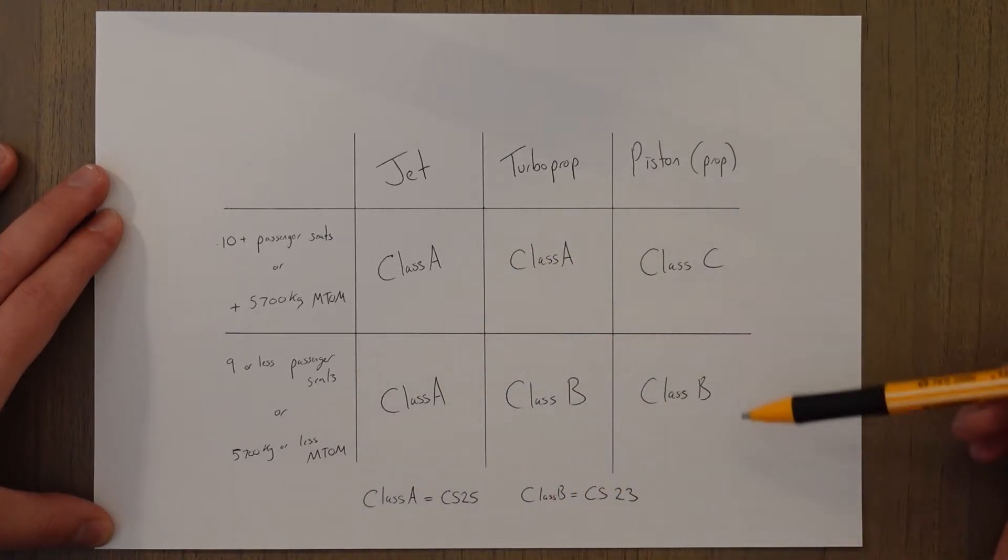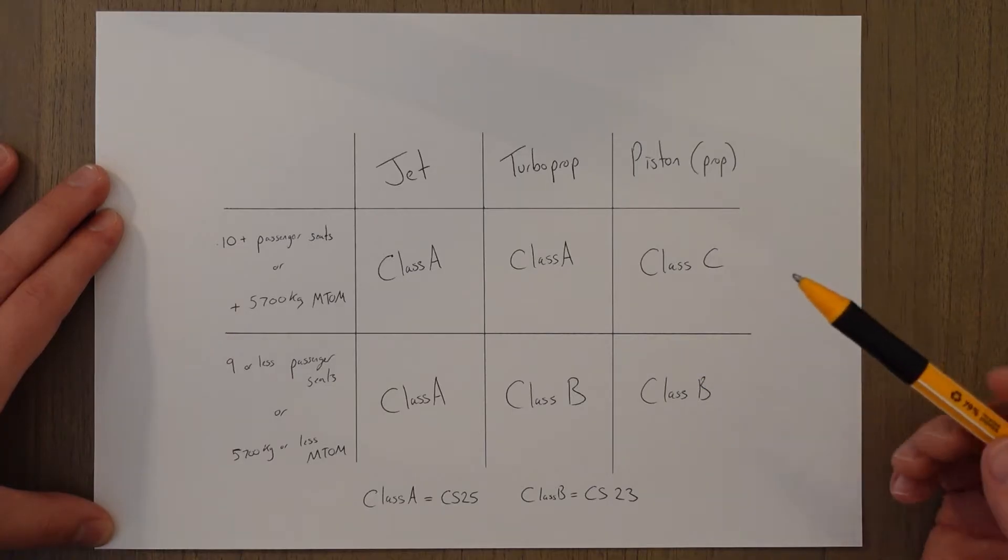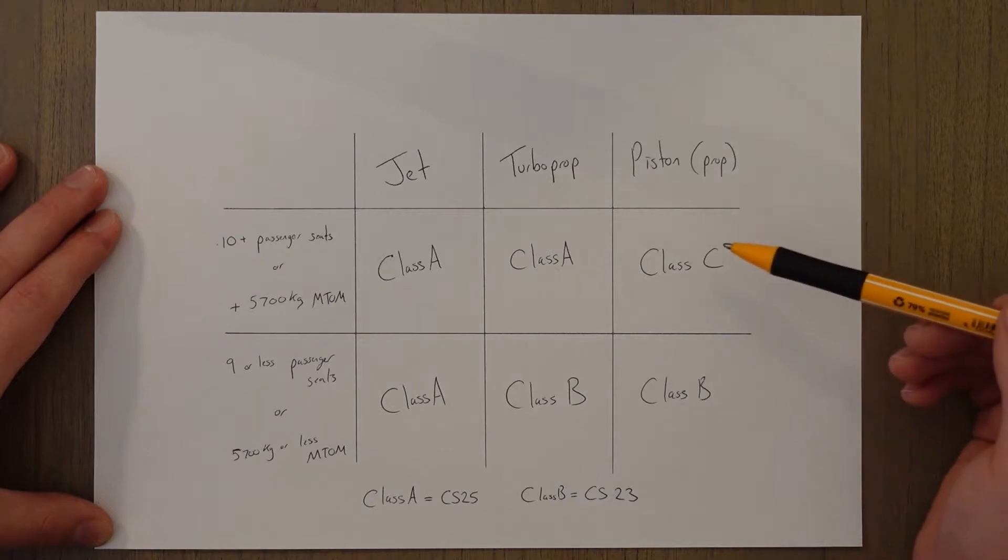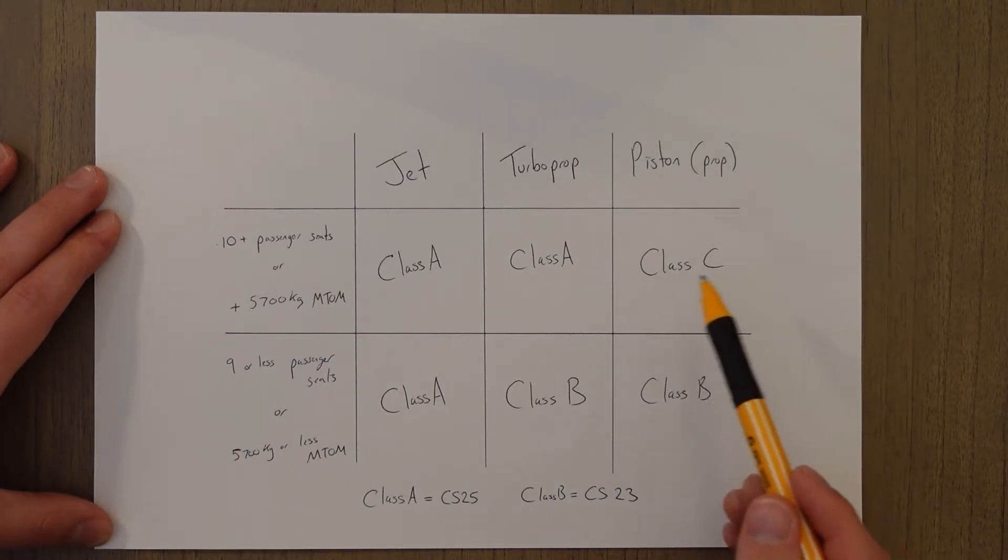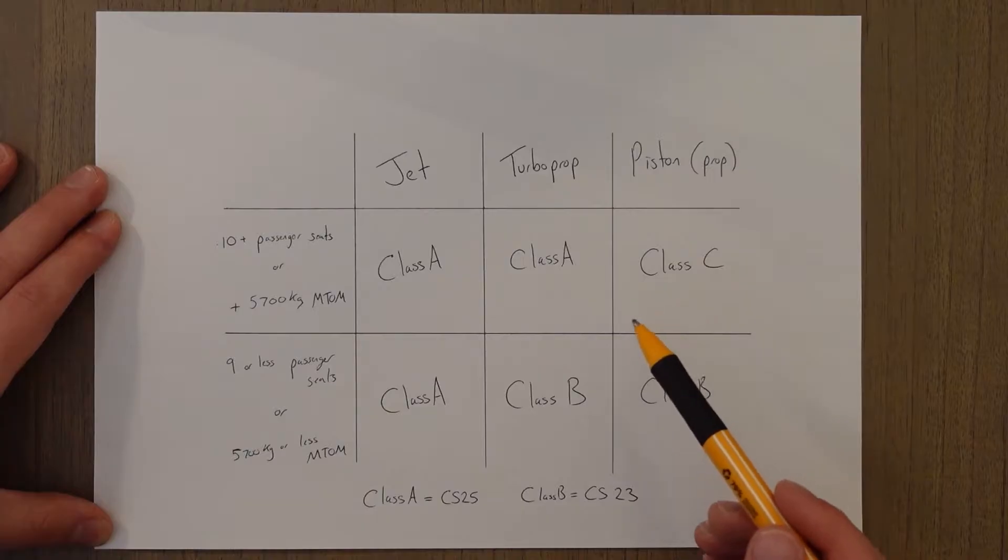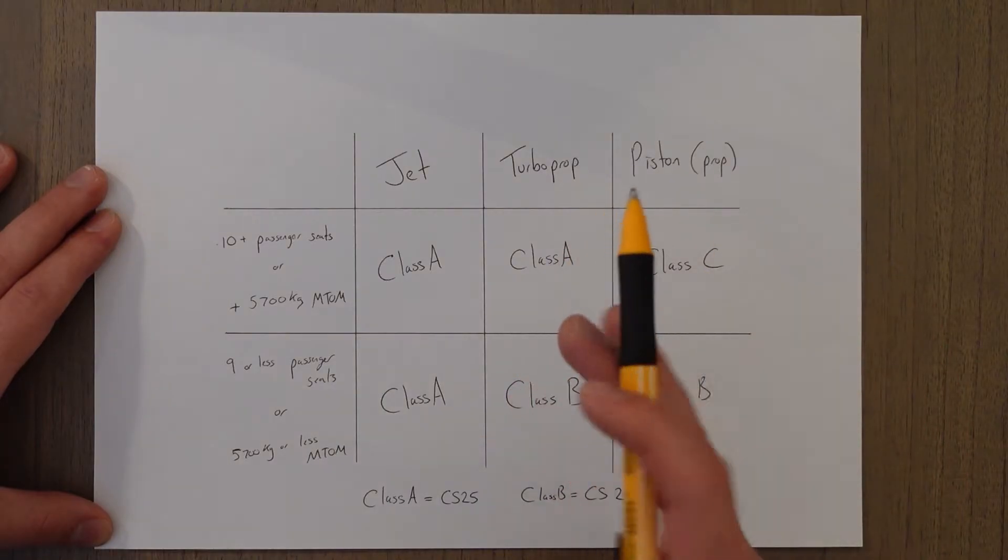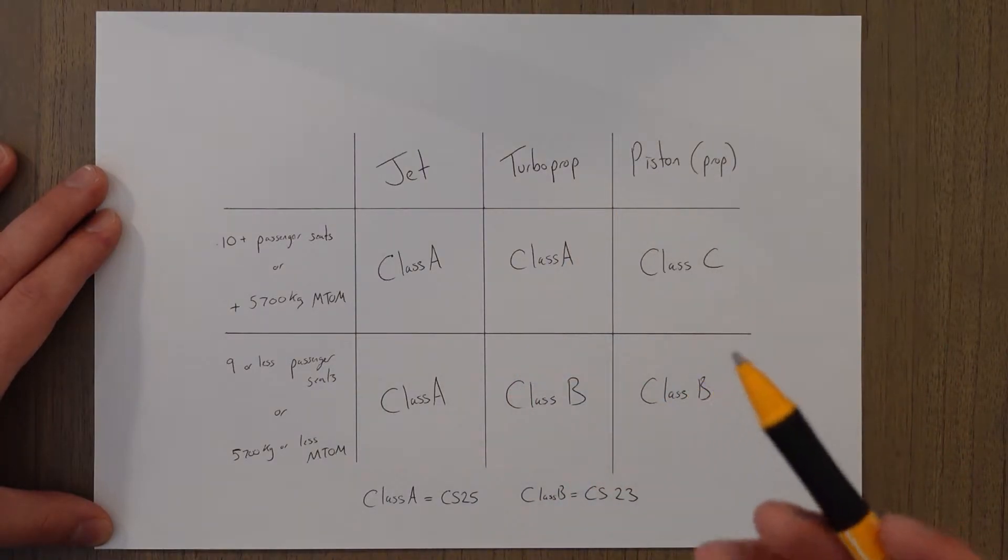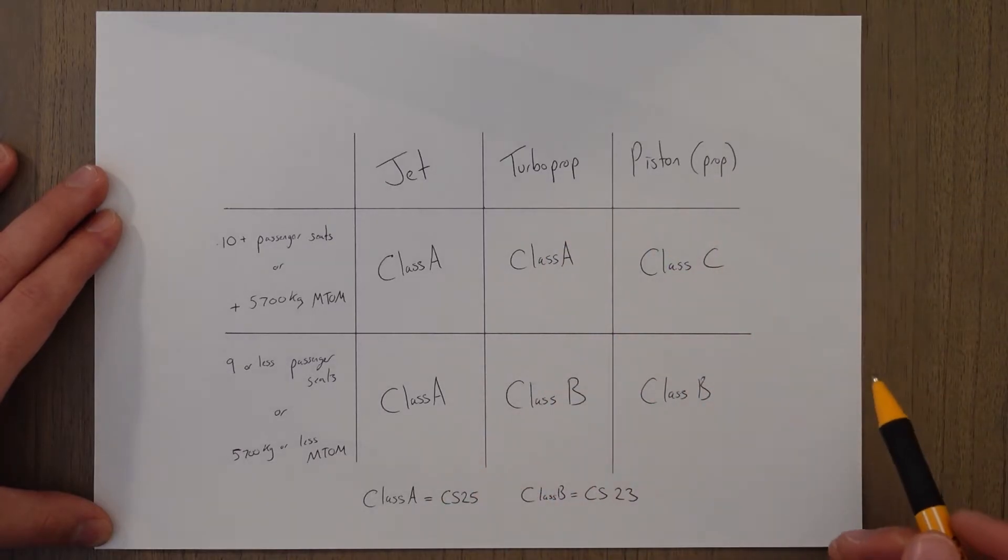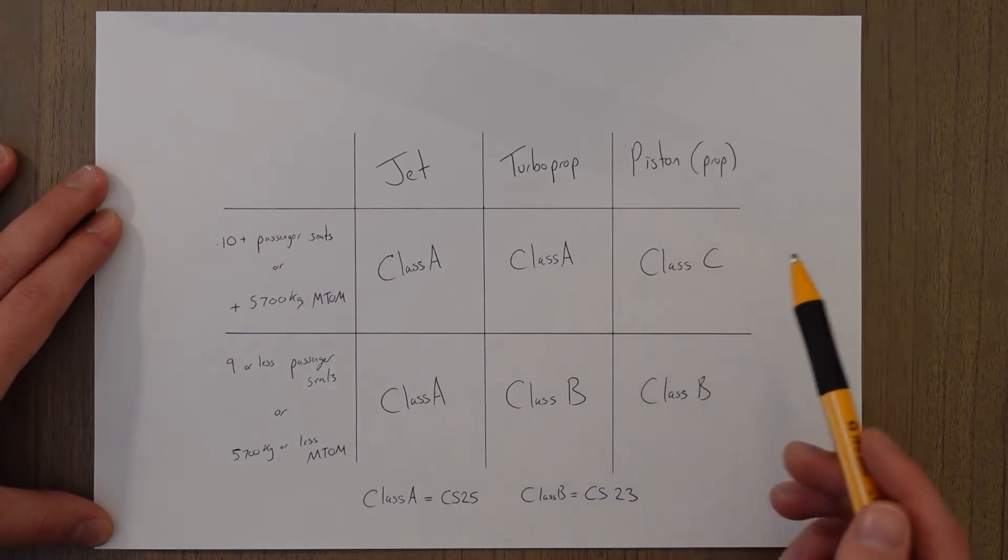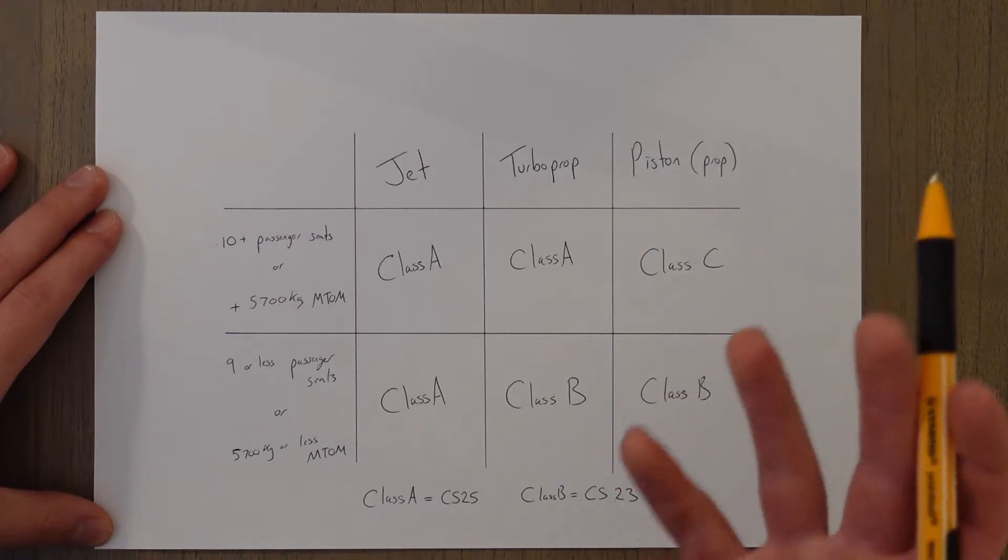There's also a third column here for multi-engine propeller driven aircraft. You can see that for small ones with nine or less passenger seats, it's Class B as well, but then for larger ones there's a Class C certification, and that's not really used anymore. That's for things that were older, from the 50s and 60s, like a DC-3. Class C aircraft are very rarely in service anymore, so the ATPLs don't actually cover them, but there is a third class of performance that you might have to know in the exam.